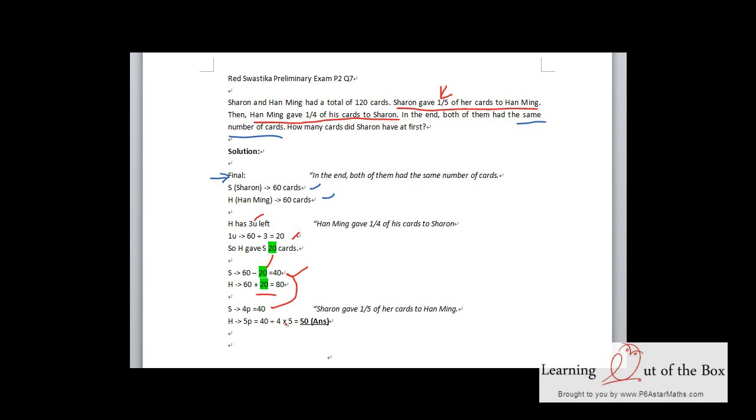So one part is 10, and the initial five parts should be 50.